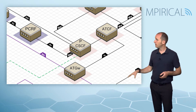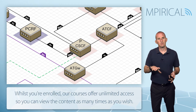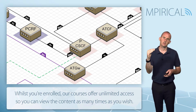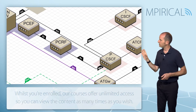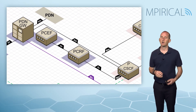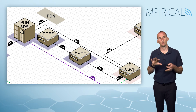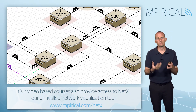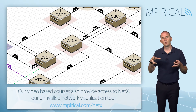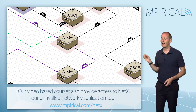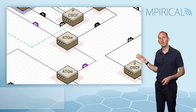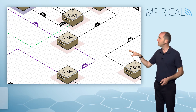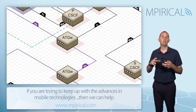Remember that connecting the two networks together — the IMS to the LTE network — at a session level is our policy and charging rules function and our policy and charging enforcement function. As we move into the IMS, you can see the access transfer control function. Our media stream is going to get anchored at the access transfer gateway. Notice on the diagram in purple the MB reference points connecting up our user planes.